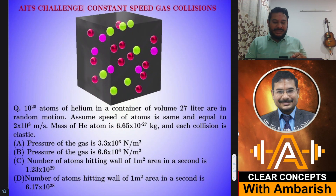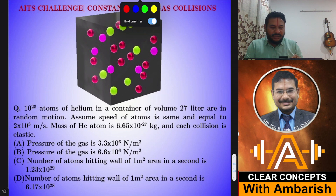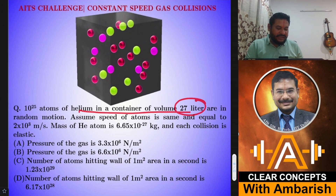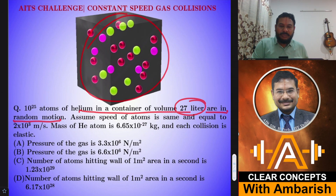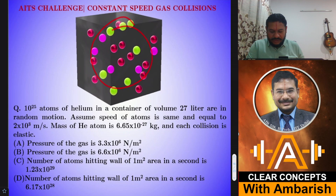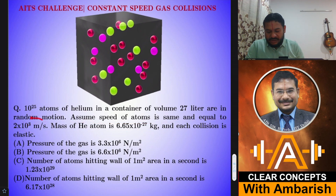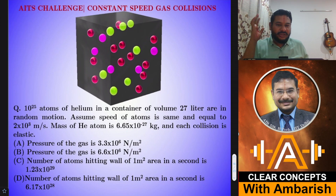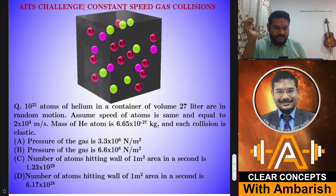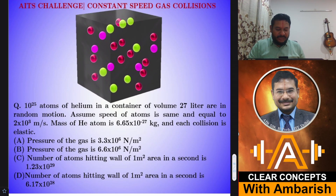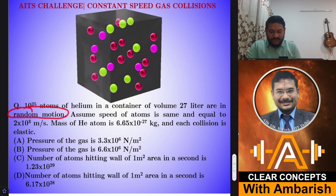Here's the question: 10²⁵ atoms of helium in a container of volume 27 liters are in random motion. Assume the speed of atoms is the same and equal to 2×10³ meters per second. Here there's a slight deviation from the standard model — all particles move at the same speed. There is no Maxwell-Boltzmann distribution; every particle moves with the same speed, but the direction is random — randomly directed.